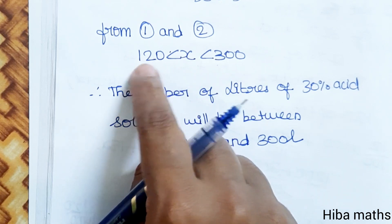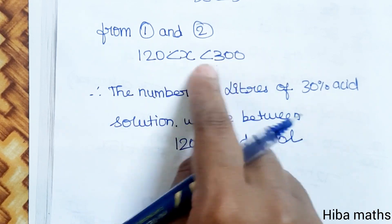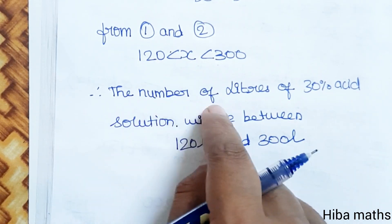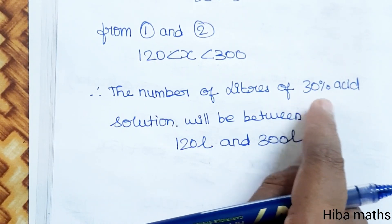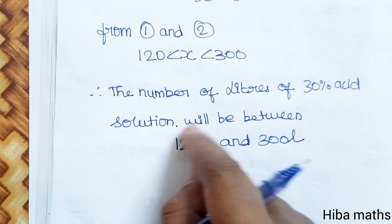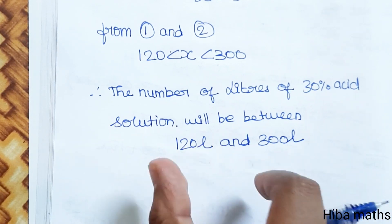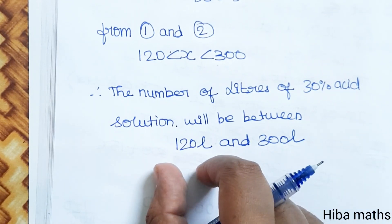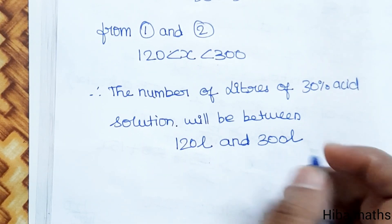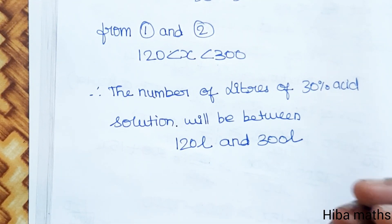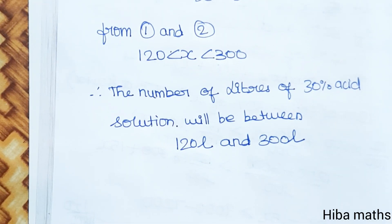Therefore, x is greater than 120 and less than 300. The number of liters of 30% acid solution to be added will be between 120 liters and 300 liters. Everyone understand? Thank you so much for watching.